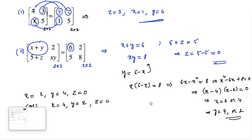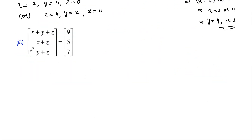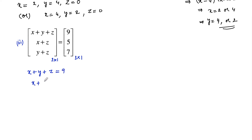Now let us consider the third case. In the third one we have 3 rows and 1 column, so it is a 3 by 1 matrix, and the other side also has 3 rows and 1 column. The two matrices are equal, their orders are the same, and corresponding elements are also equal. So x plus y plus z is equal to 9, x plus z is equal to 5, and y plus z is equal to 7.